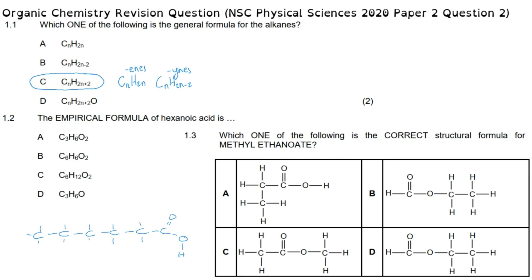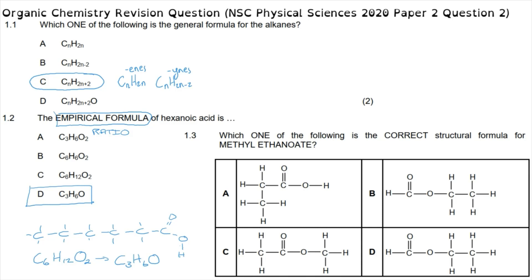This formula has six carbons, twelve hydrogens, and two oxygens. We might be tempted to say option C (C₆H₁₂O₂) is correct, but the question asks for the empirical formula — the simplest ratio of atoms. Dividing each atom count by two gives C₃H₆O, so the correct answer for 1.2 is option D: the empirical formula for hexanoic acid is C₃H₆O.